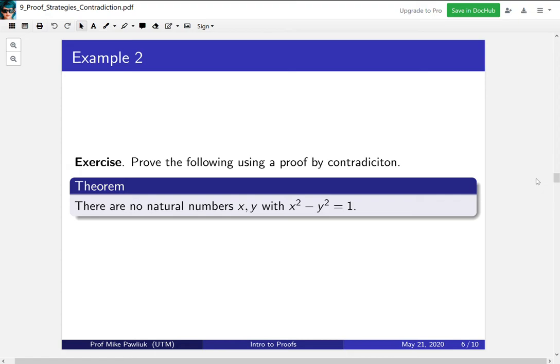What we want you to prove is that there are no natural numbers x and y with x² - y² = 1. There's one mathematical idea you'll have to have. Start by assuming that there are natural numbers that do this and then derive a contradiction. There are many ways to prove this and many contradictions you could possibly come up with.